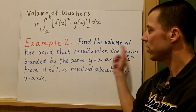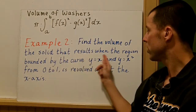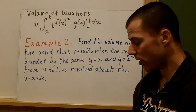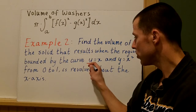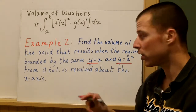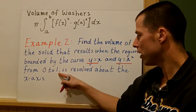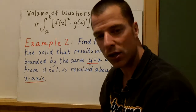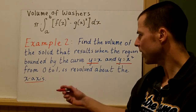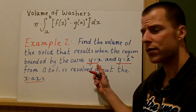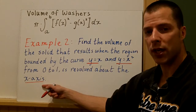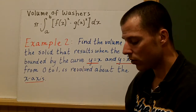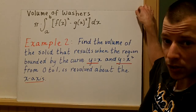Find the volume of a solid that results when the region bounded by y equals x and y equals x squared, from 0 to 1, is revolved about the x-axis. Here we have two curves — unlike the first example with one curve. We're going from 0 to 1 and rotating around the x-axis, so we'll set up the drawing to see why it looks like a washer.